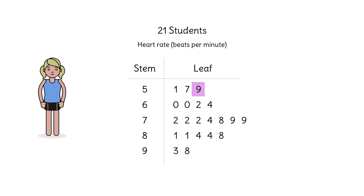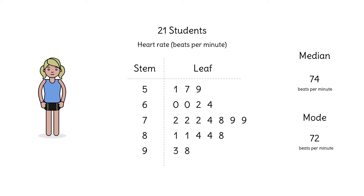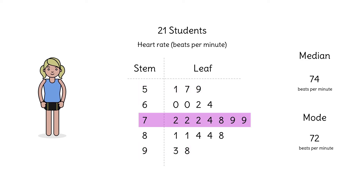Counting 11 heart rates to the median is a bit easier now. There it is: 74. Can you see the mode? There it is: 72. Where are most of the heart rates concentrated — near the median or at the extremes? There are more heart rates close to the median.